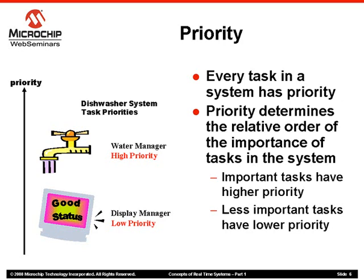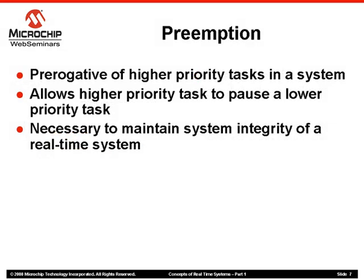But how does priority actually help the coherent functioning of the system? Using the priorities of each task, we can devise a scheme that allows coherent operation of the system — simply by preventing low-priority tasks from doing their work when a higher-priority task wants to do work. In other words, by virtue of its priority, a task can preempt lower-priority tasks. This prerogative of higher-priority tasks to perform their job even when other lower-priority tasks are performing their job is known as preemption.